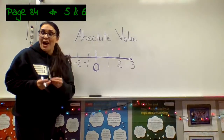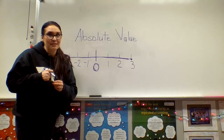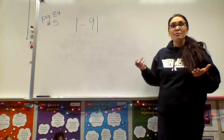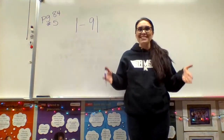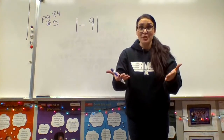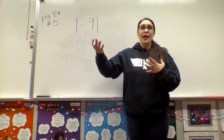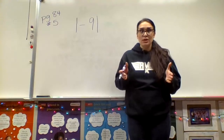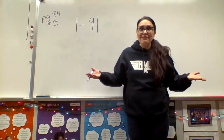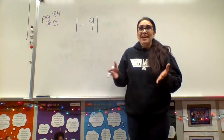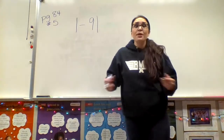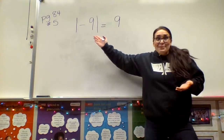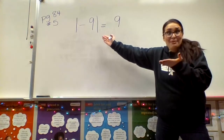Let's do some practice problems. In your book on page 84, let's look at numbers five and six. In your textbook, you'll notice each of these numbers is kind of in a box — that's telling you they're not asking you to add or multiply negative nine. They're asking for the absolute value of negative nine. How many steps toward the negative end of the number line is negative nine? How far is it from zero? Negative nine is nine spots away from zero, so the absolute value of negative nine is just nine.